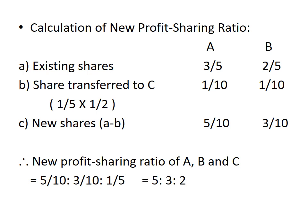Before going into the first step, since the new profit sharing ratio is not given, let's calculate it. A and B are old partners who share profit in the ratio 3:2, so A's existing share is 3/5 and B's is 2/5. By admitting C, they transferred some shares to C — A gave 1/10 and B gave 1/10, since C's share of 1/5 was acquired equally from A and B. The new share is the existing share minus the share transferred to C. So A gets 5/10 and B gets 3/10. Therefore, the new profit sharing ratio of A, B, and C is 5:3:2.